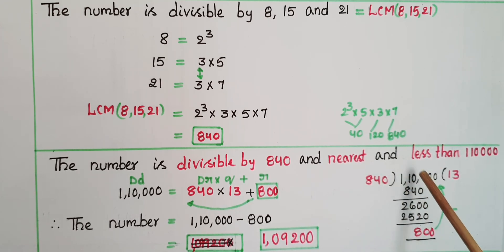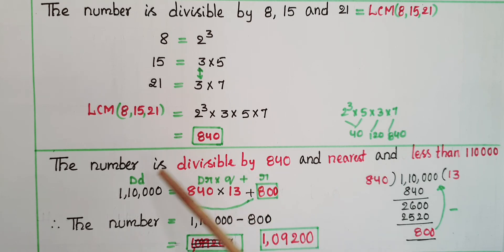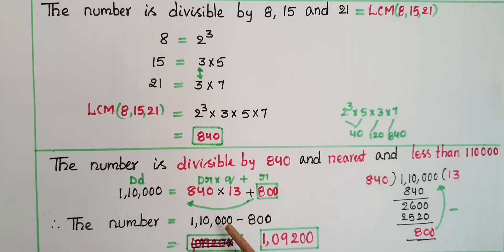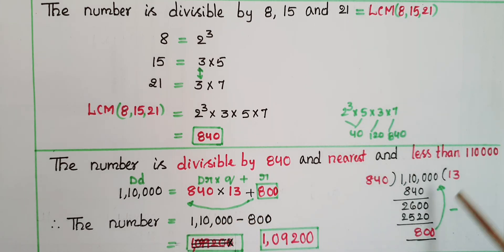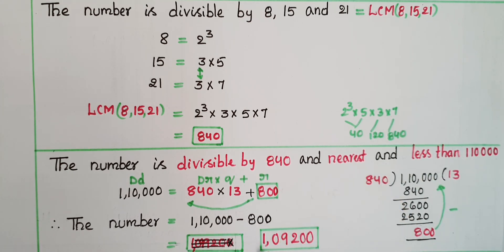We know that dividend = divisor × quotient + remainder. So if we subtract the remainder from the dividend, we get a number exactly divisible by 840. Therefore, the required number is equal to one lakh ten thousand minus eight hundred, which equals one lakh nine thousand two hundred. This number is exactly divisible by 840 and nearest to one lakh ten thousand.